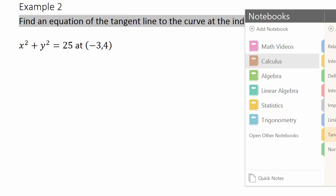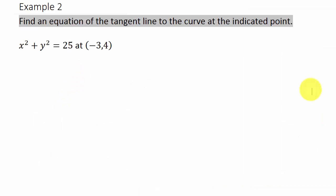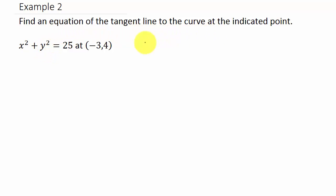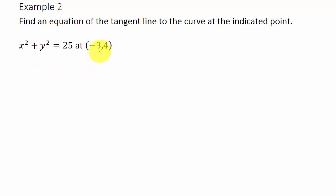Let's take a look at one more. Here we're finding the tangent line to the curve x squared plus y squared equals 25 at the point (negative 3, 4). Here we have to use implicit differentiation. We have a point and we need the slope, so we have to take the derivative of this and then evaluate the derivative at this point.